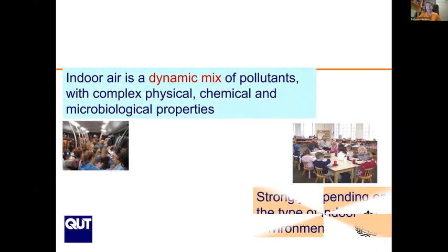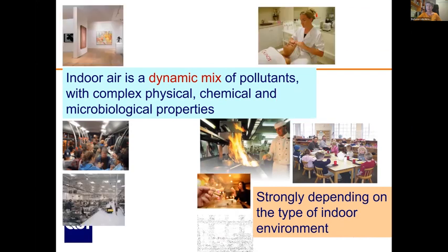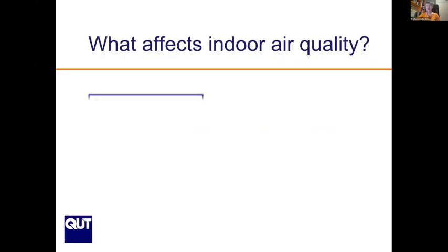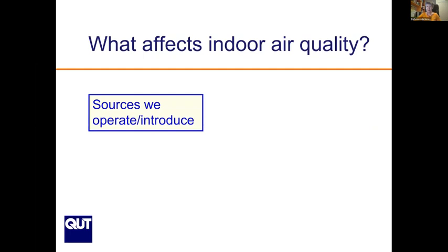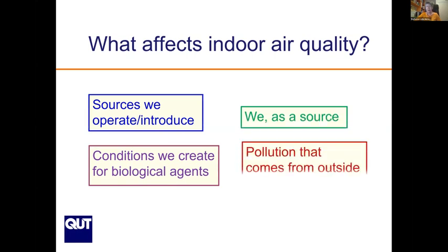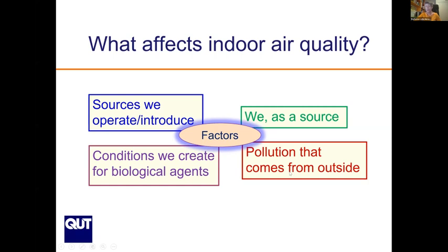Indoor air is a dynamic mix of pollutant dynamics because of emissions, interactions, and changes — with complex physical, chemical, and microbiological properties — and it strongly depends on the type of environment. What affects indoor air quality? First, sources we operate or introduce; conditions we create for biological agents; us as a source; pollution that comes from outside; and various related factors.